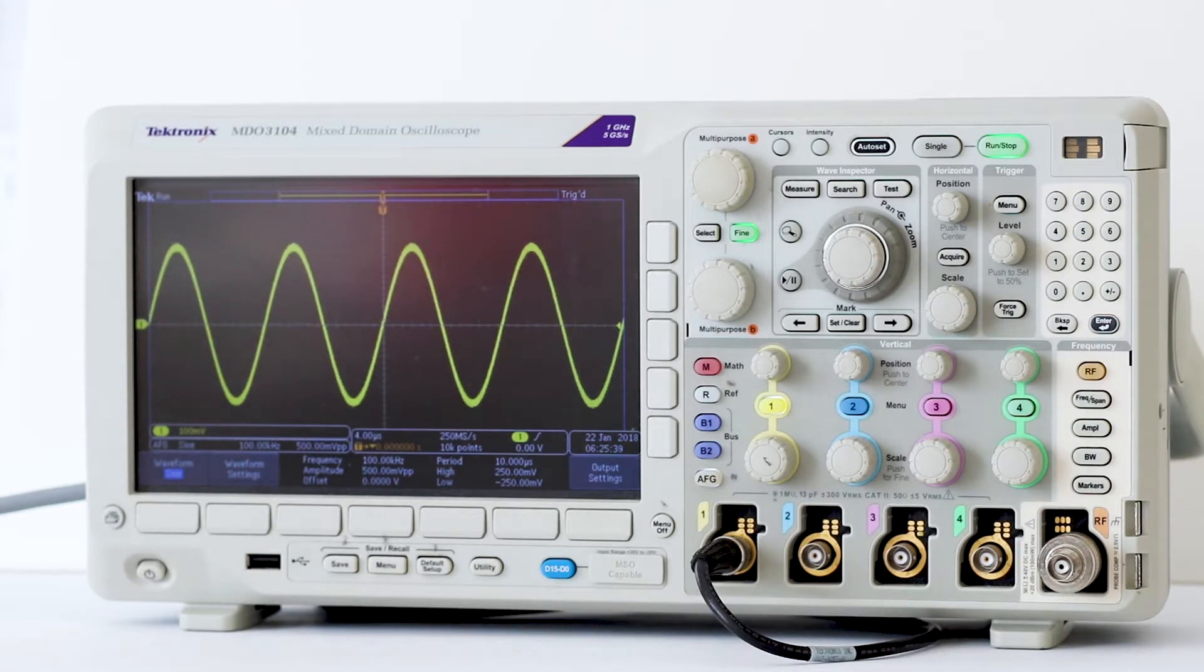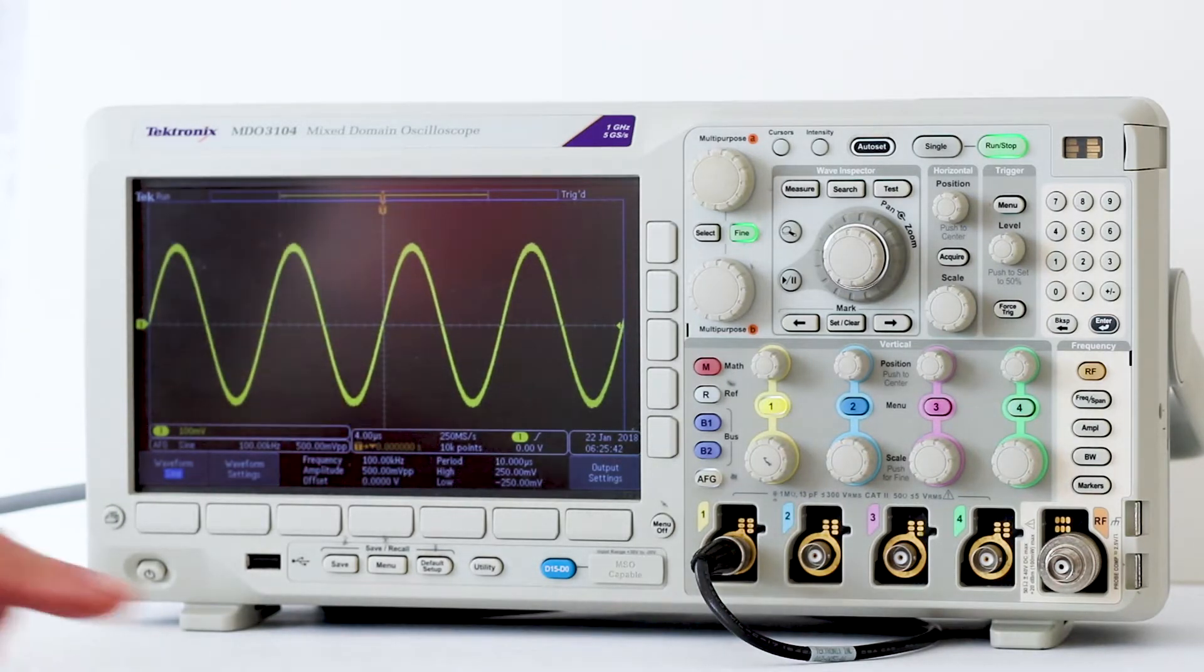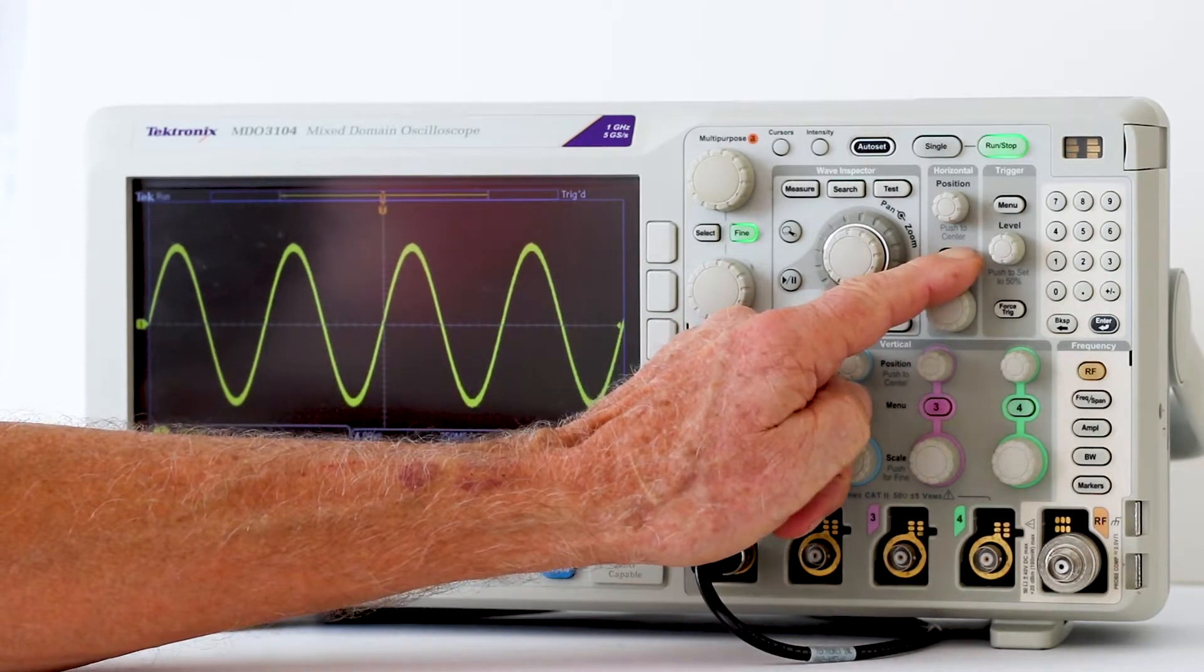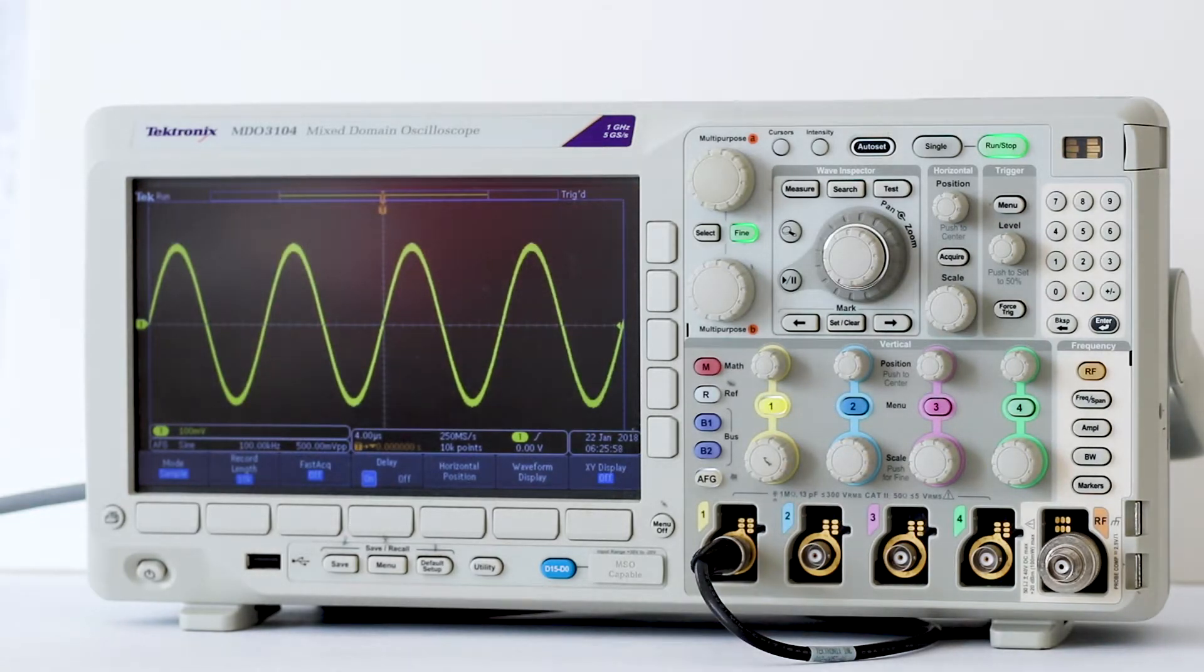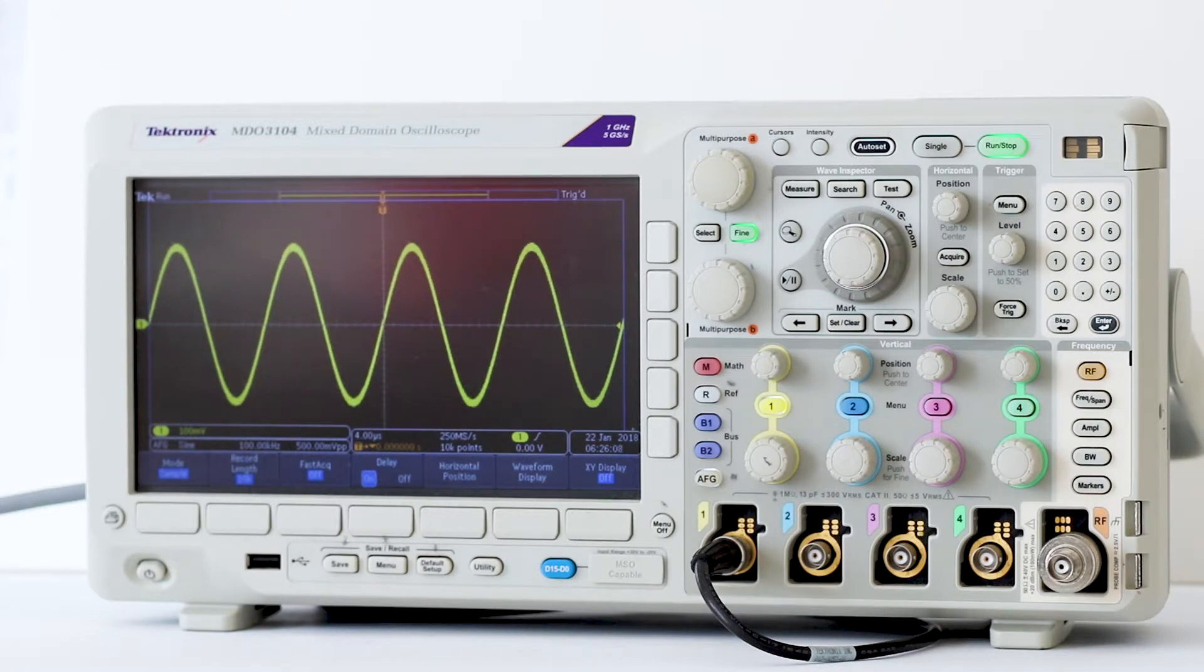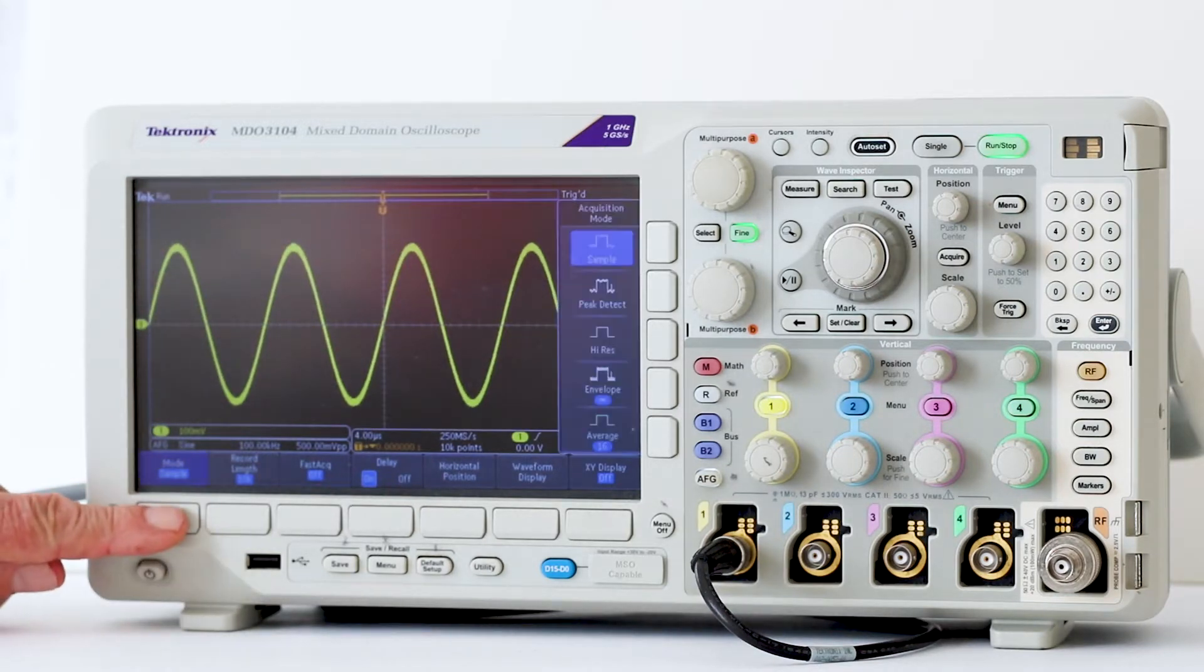To change sampling modes, first press Acquire. This frequently used button located between the position and scale knobs in the horizontal section on the front panel opens up the horizontal acquisition menu below the display. What we are interested in right now are sampling modes, so we press the soft key associated with mode, which is the first menu selection on the left. This opens the vertical acquisition mode menu on the right, which permits the user to select one of the sampling modes.